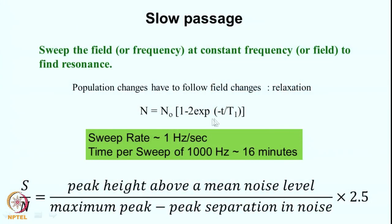How fast can you sweep the field? Recall the discussion of relaxation time — whenever we change the field there will be changes in the energy levels and populations. The population changes have to follow the field changes in order to represent the equilibrium situation appropriately. The population difference N for a two-level system is N0 times (1 minus 2e^(−T/T1)), where T1 is the spin-lattice relaxation time.